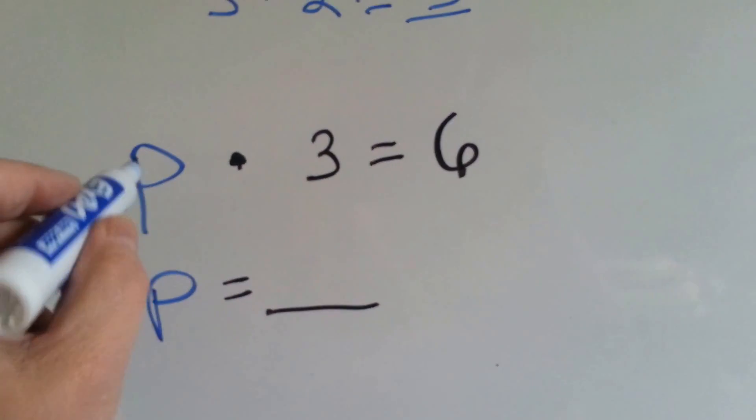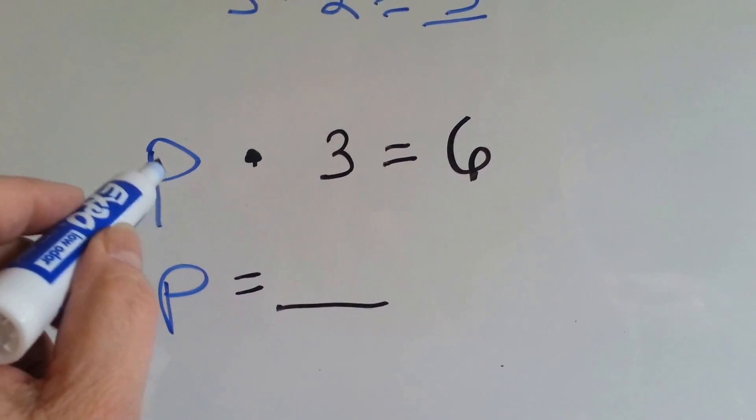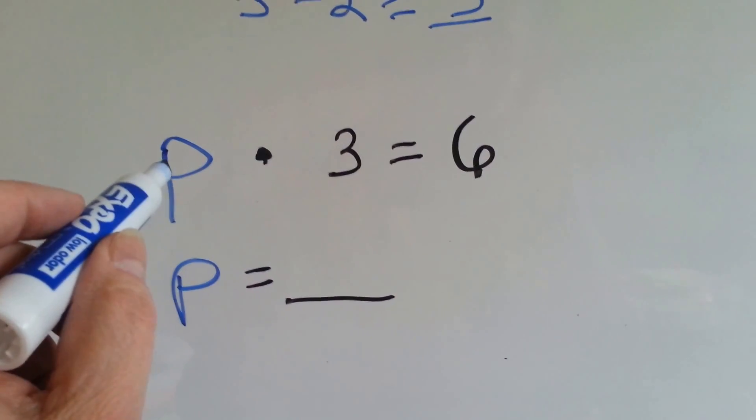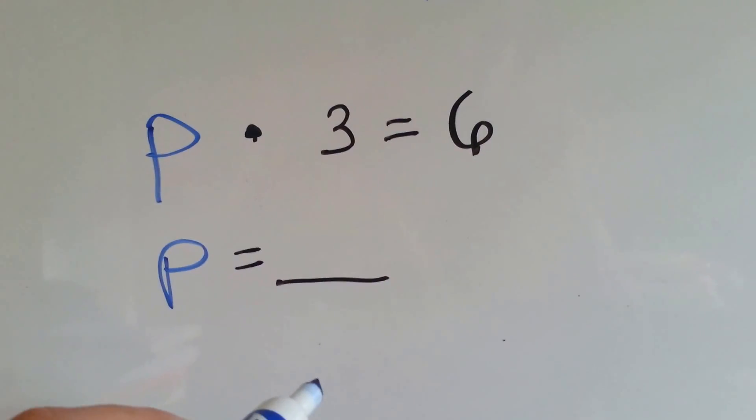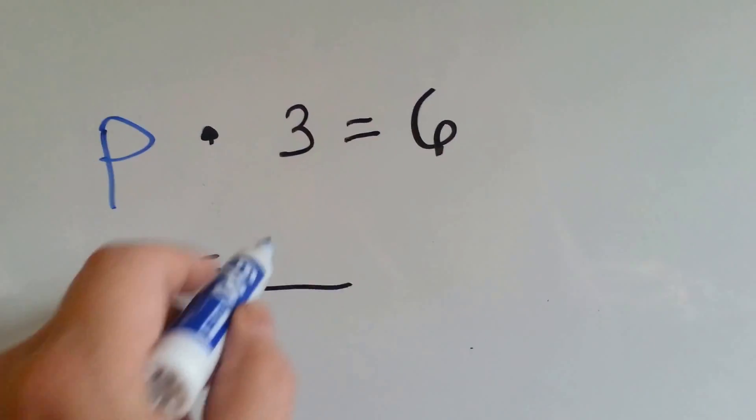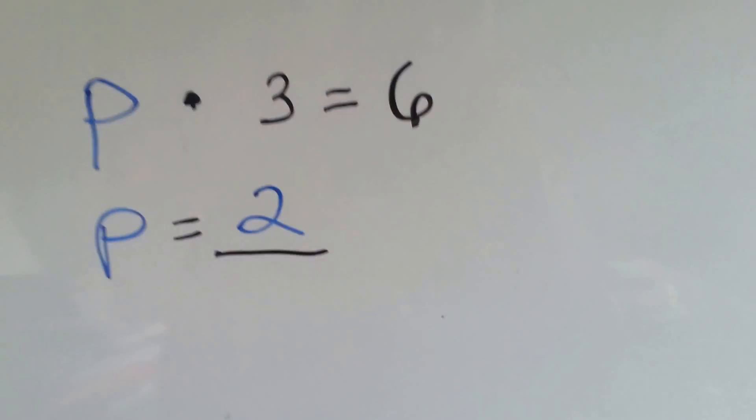I want you to just think of your times table for right now and think of what the p could be. What times 3 equals 6? If you know your times table, you know that 2 times 3 equals 6.